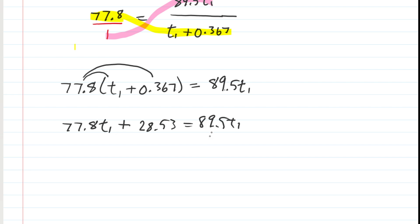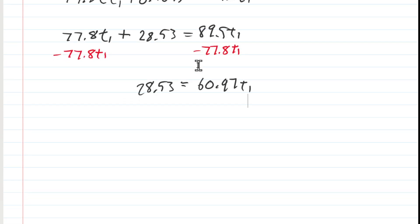Next we will subtract from both sides of the equation the 77.8 T1. That leaves us with 28.53 is equal to 60.97 T1. And then we divide both sides of the equation by 60.97. In fact, I made a very silly error here in my arithmetic. When we subtracted on the right-hand side, we should have gotten 11.7 T1. So forgive me for that. Then we can divide both sides by 11.71. So now we have 2.44 hours is equal to T1.